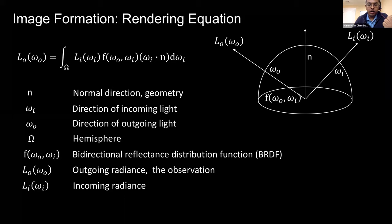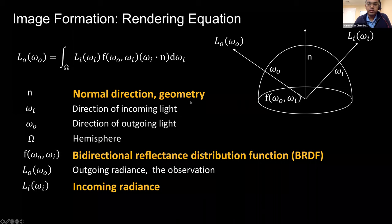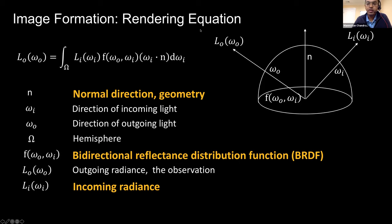Let's start with background on the image formation process, defined by the rendering equation. Consider a point with surface normal N. The image intensity observed from a camera position given by omega_O is the integral of light reflected from all incoming directions omega_I. The surface geometry given by normals and depth, the incoming light from any direction, and the fraction reflected toward the camera are all unknowns.